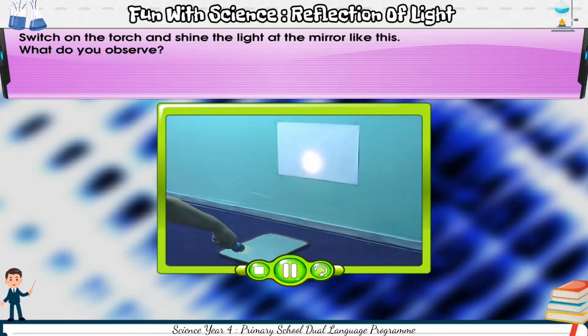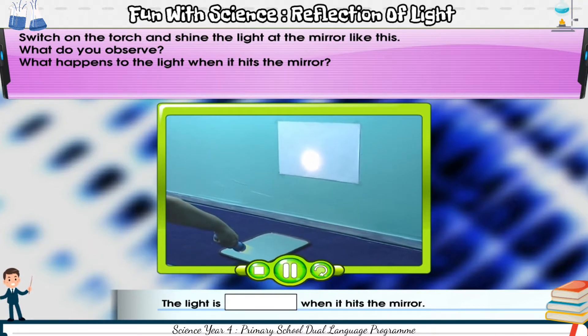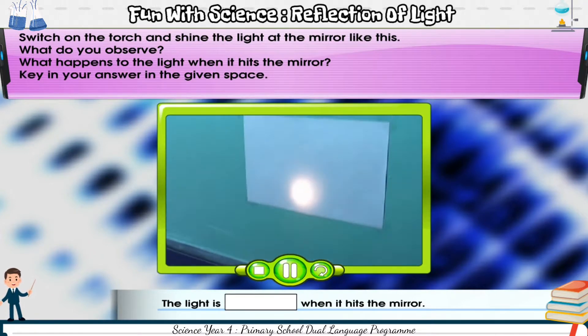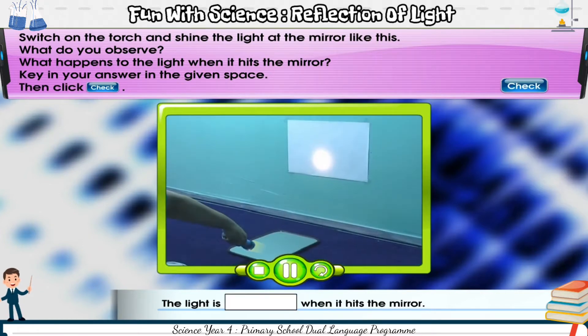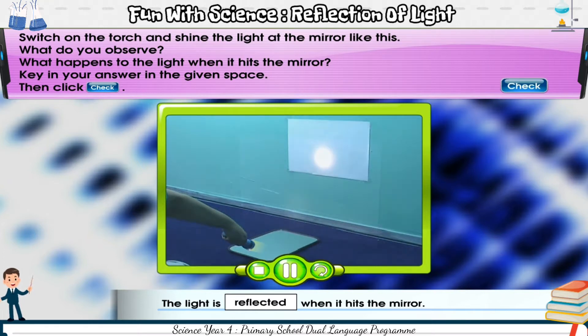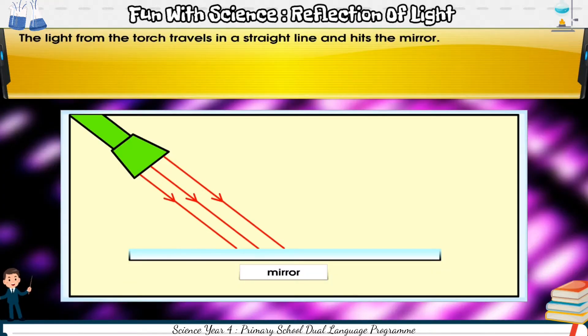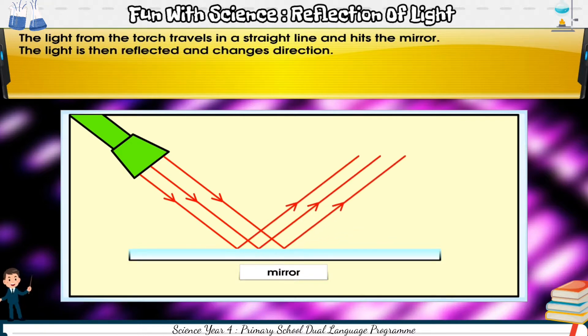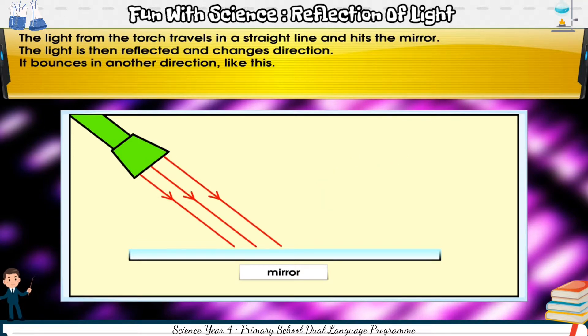What do you observe? What happens to the light when it hits the mirror? Key in your answer in the given space. The light from the torch travels in a straight line and hits the mirror. The light is then reflected and changes direction. It bounces in another direction like this.